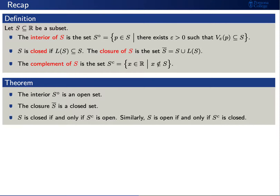We now have some nice properties regarding these three definitions. The interior S⁰ is an open set. The closure S-bar is a closed set. And S is closed if and only if its complement Sᶜ is open. Similarly, S is open if and only if its complement Sᶜ is closed.